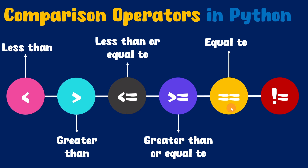Next we have the equal to comparison operator. Equal to comparison operator will take two values. If the value present on the left hand side is equal to the value present on the right hand side, it will return true. If the value present on the left hand side is not equal to the value present on the right hand side, it will return false. Notice we are using two equal to signs in order to represent the equal to comparison operator.